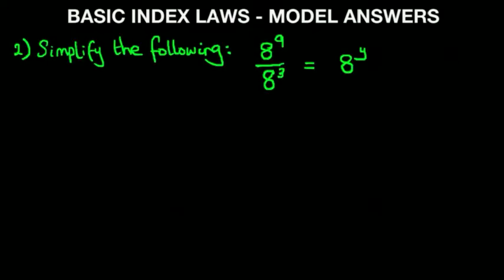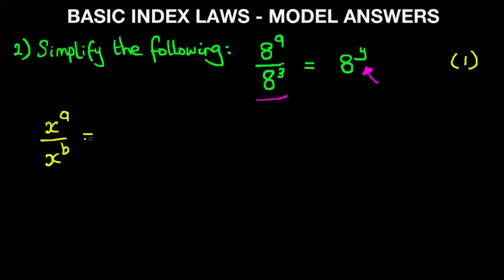Now let's move on to our second question: simplify the following. We have 8 to the power of 9 divided by 8 to the power of 3 equals 8 to the power of y, so we are being asked to work out the value of y. This would typically be a one mark question. The rule which applies here is x to the power of a divided by x to the power of b equals x to the power of a minus b. Let's circle this.